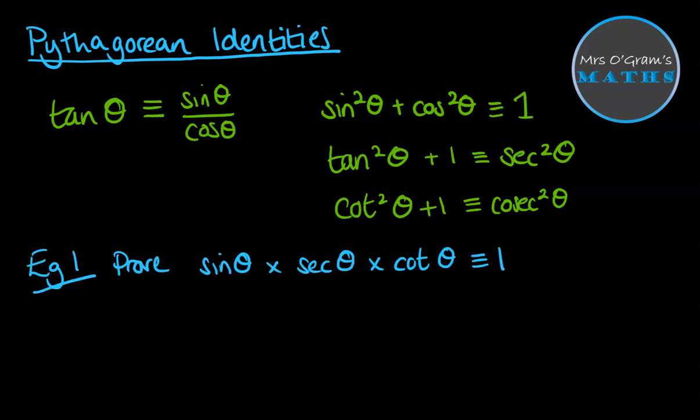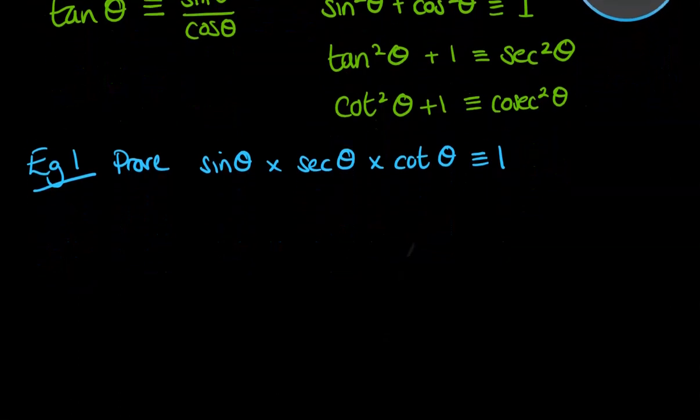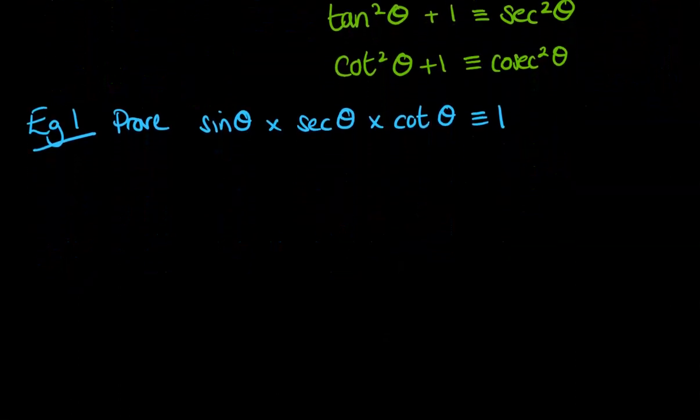And here is an example of where you might be asked to use these. So we are asked to prove that sin theta times sec theta times cot theta is always going to be equal to 1. Now the key here is to start on one side and try and make it equal the other side. So I'm going to start with the left-hand side. And we manipulate that. So sin theta doesn't change just yet, but sec theta is 1 over cos theta.